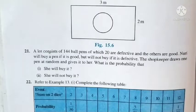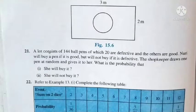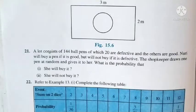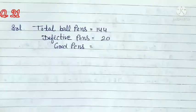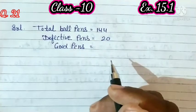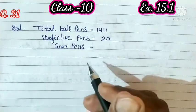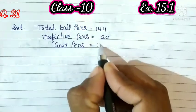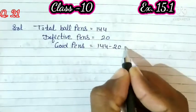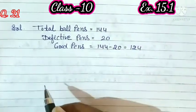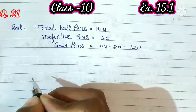In the second part, she will not buy it — meaning Nori will not buy a defective pen. So in the second part, we need to find the probability of a defective pen. Here, total pens = 144, defective pens = 20, so good pens = 144 − 20 = 124.